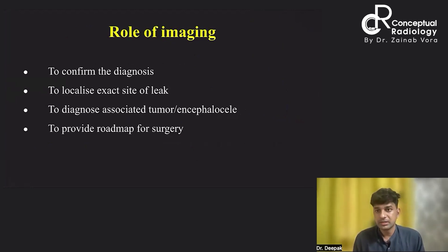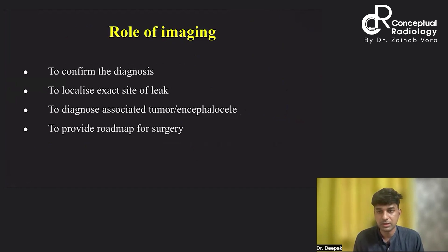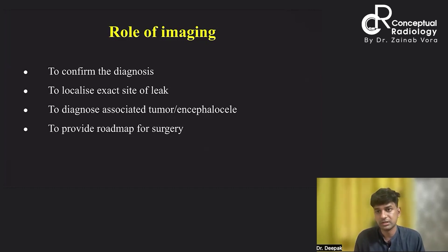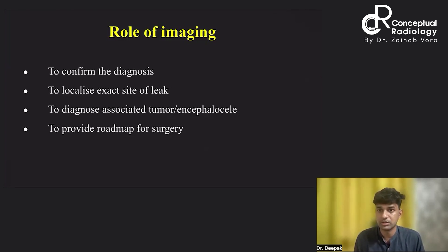Once CSF fistula is suspected and beta-2 transferrin is raised, the patient proceeds to imaging. The radiologist's role is to confirm the leak and, crucially, to identify the site for the surgeon. Previously, a craniotomy approach was used, but now conservative management is tried first. If repair is needed — to avoid future meningitis — a transsphenoidal or transnasal endoscopic approach is used, with gel foam patch or dural patch repair.